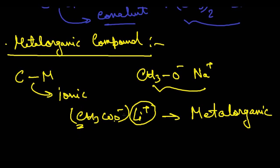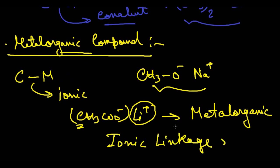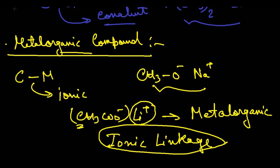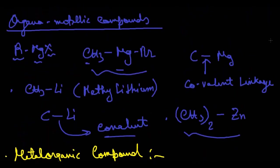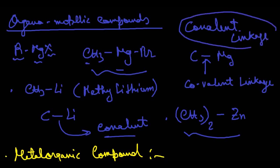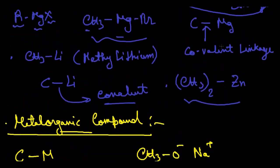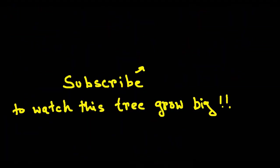The main difference between metal organic and organometallic compounds is: metal organic compounds have an ionic linkage between carbon and the metal, while organometallic compounds have a covalent linkage. This is the main difference between organometallic and metallo-organic compounds.